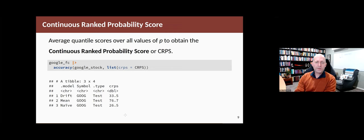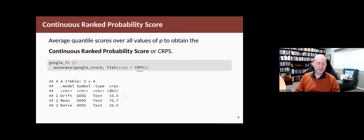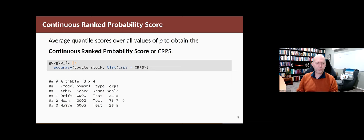Of course, we're not just interested in certain prediction intervals — we're actually interested in the whole probability distribution. In that case, we're interested in all values of P. If we average the quantile score over every possible value of P between 0 and 1, we get what's called the continuous ranked probability score, or CRPS. You can compute this easily in Fable by asking for CRPS in the accuracy function. This is averaging over all possible P values, and it tells us that the naive method has the lowest value — it's the best of these methods, a little better than drift and a lot better than the mean method.